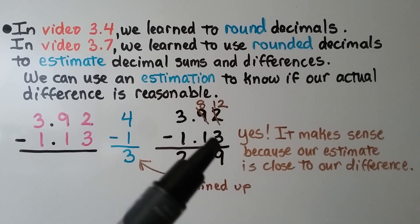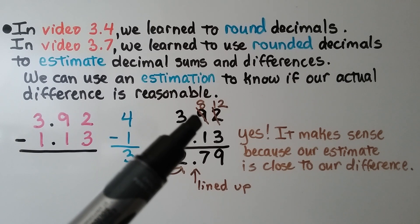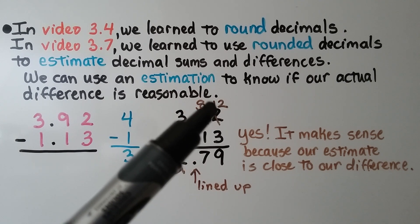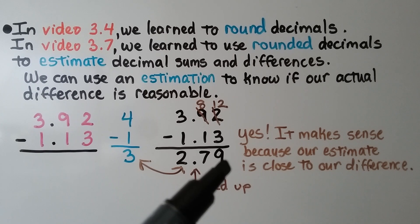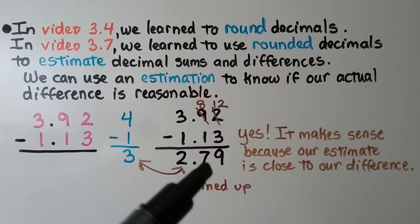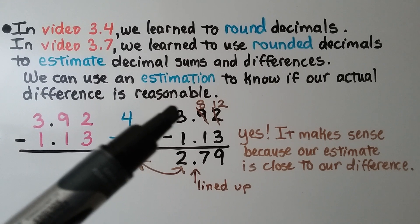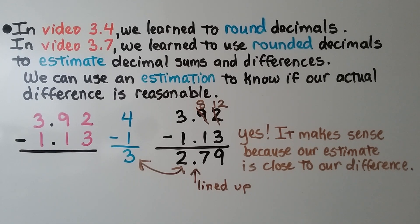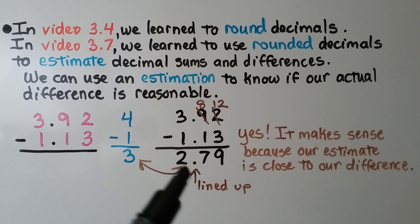We subtract 2, and we need to take 3 away but we can't, so we regroup from the tenths place. It becomes an 8, and this becomes 12 hundredths. We subtract 3 and get 9 hundredths. We have 8 tenths take away 1 tenth — that's 7 tenths. We have 3 minus 1, that's a 2. And it makes sense because our estimate is close to our difference. 2 and 79 hundredths is very close to 3.